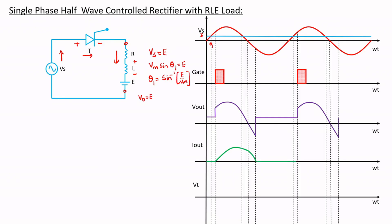The same thing happens with respect to current — the thyristor becomes open-circuited and there is no current flowing through the load, so it equals zero. Two important points: the angle at which the output current becomes zero is called beta, the extinction angle. The angle where Vs again becomes less than E is called theta2. At theta2, E is greater than Vs, but because of the energy stored in the inductor the output voltage continues in the negative direction. So theta1, theta2, and beta are three important angles to remember.